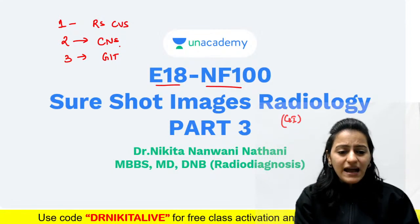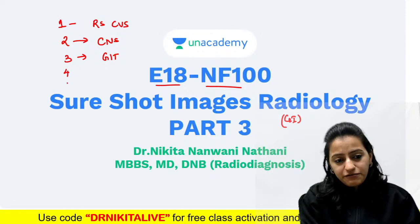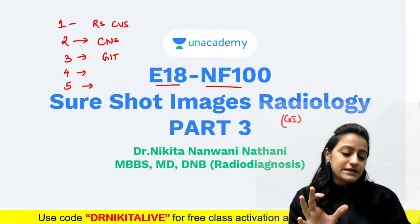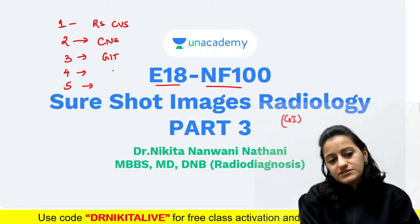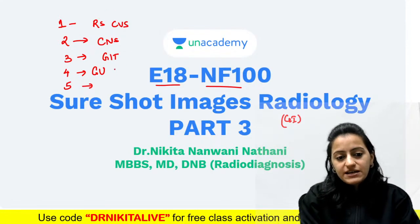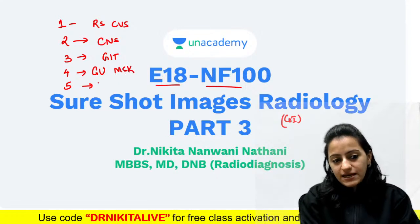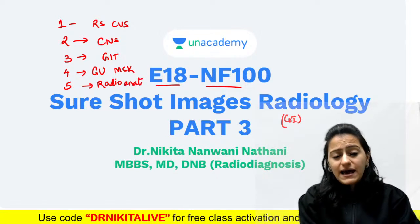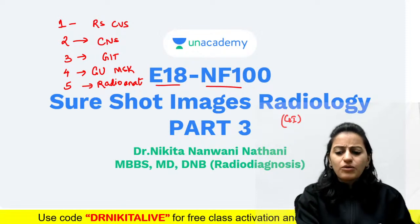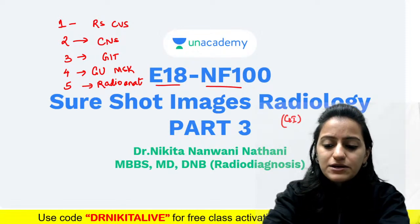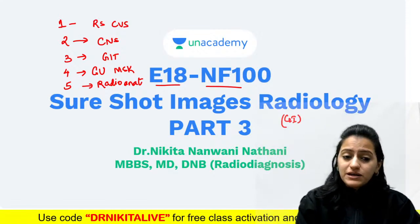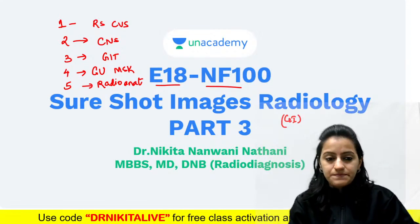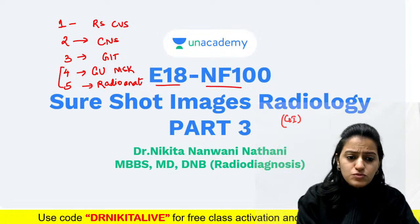Parts 4 and 5 of Short Shot Images will complete our series on radiology. The remaining systems are genitourinary and musculoskeletal, and there will be a separate session on radio anatomy, because one question definitely comes from radio anatomy in your exam — like in FMG and even in NEET PG 2021, where you were asked to identify the psoas muscle. So 2 more sessions to go.